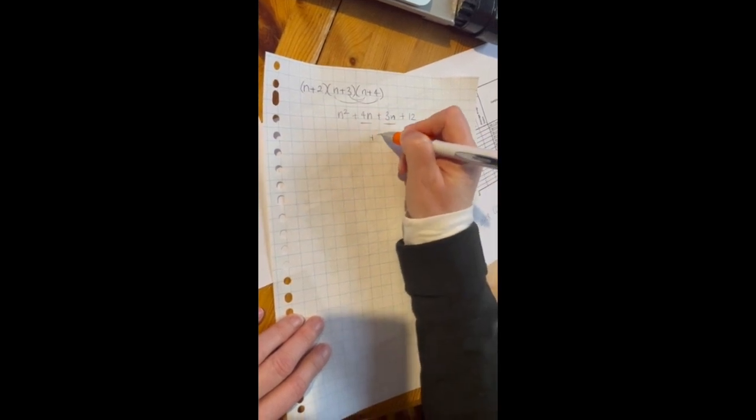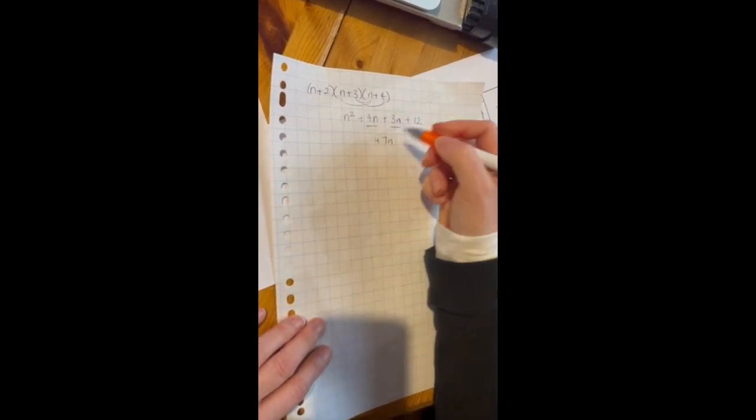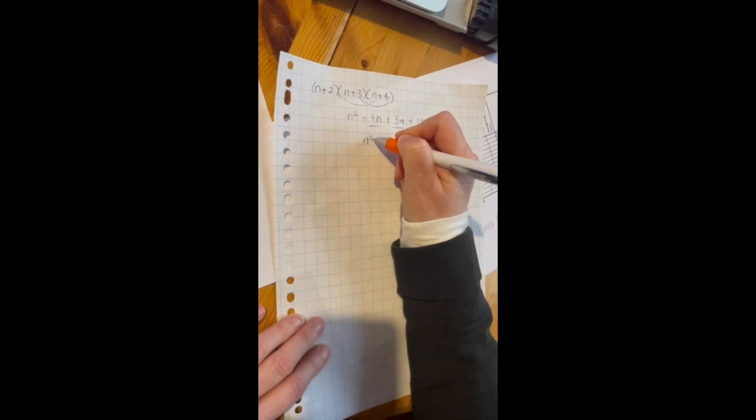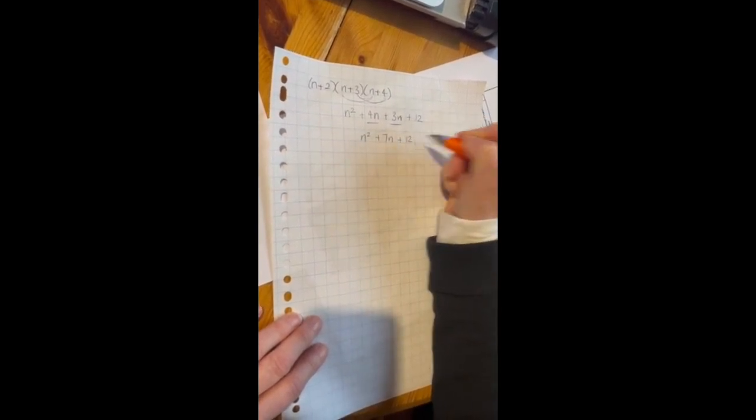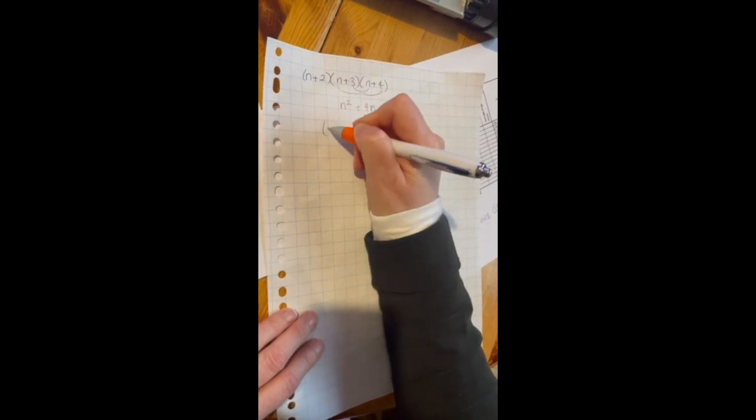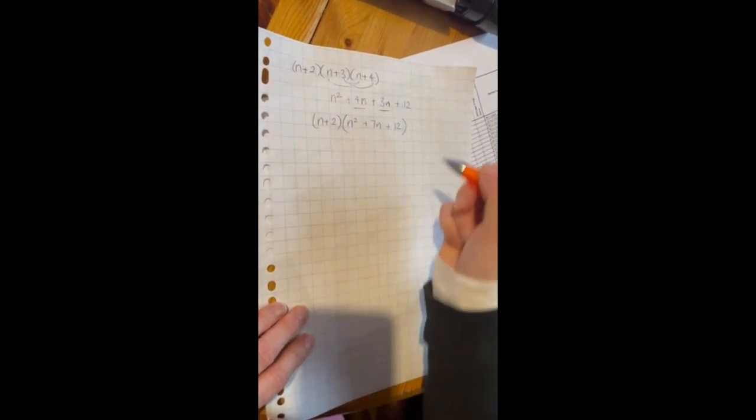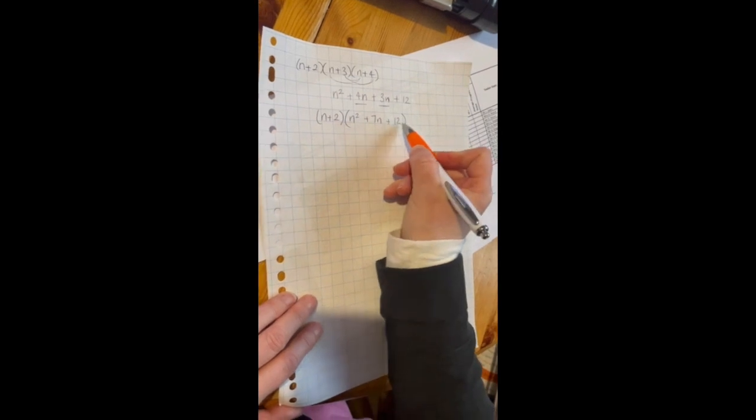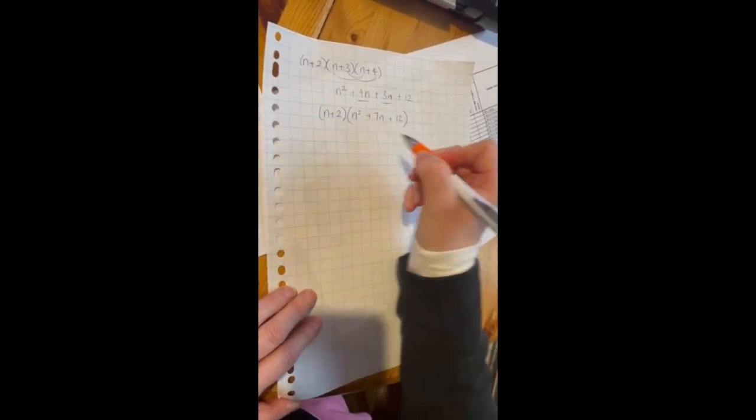And what you have now is those two brackets are now that equation. We'll put that in back in brackets and then you multiply out the next one. So the same thing applies. I need to multiply the n by each one of these and the 2 by each one of these.